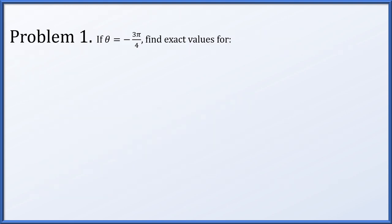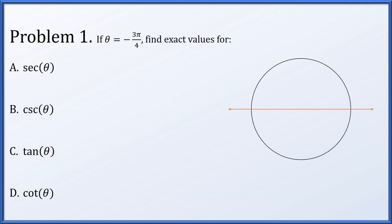In problem 1, we're given the angle theta to be negative 3π/4, and we're going to find exact values for the secant, cosecant, tangent, and cotangent of theta. Here's our standard unit circle along with the x-axis. The angle is negative 3π/4, which means starting from the positive x-axis, we're going to rotate clockwise 3π/4 and end up somewhere around here. The acute angle formed with the x-axis is this missing bit of π/4.